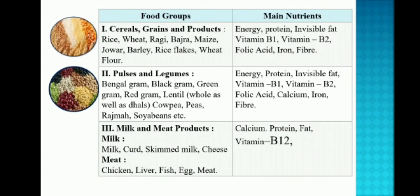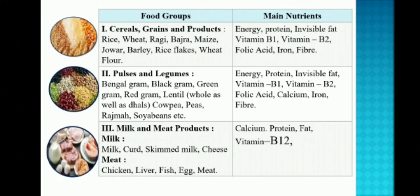Coming to the third group, milk and meat products: milk, curd, skimmed milk, cheese, chicken, liver, fish, egg, meat. The nutrients contained are calcium, protein, fat and vitamin B12.